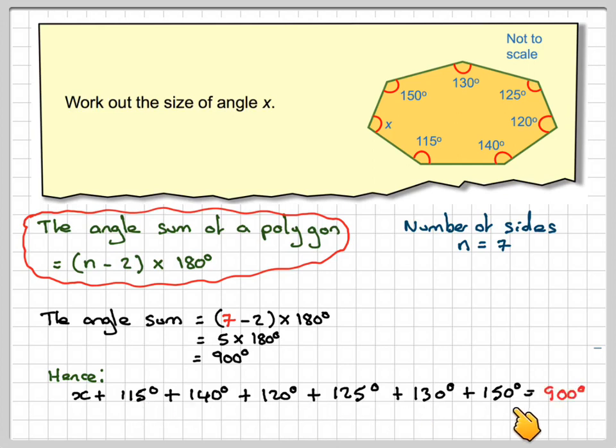If we add these all up on our calculator, we're going to get x plus 780 is equal to 900.